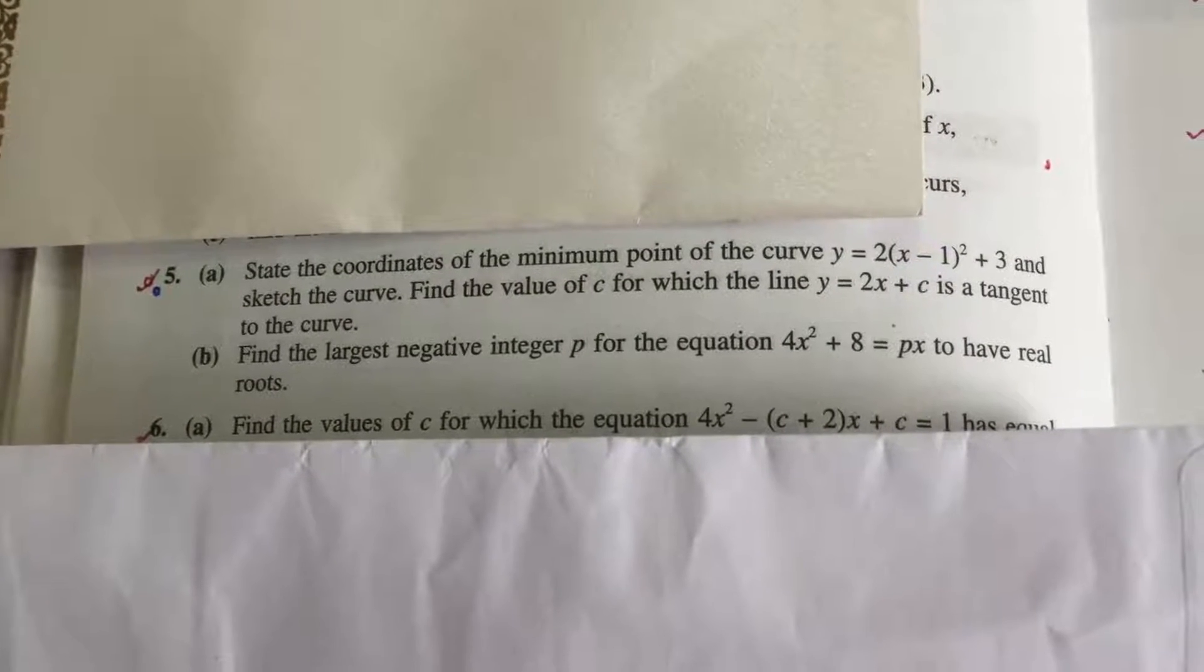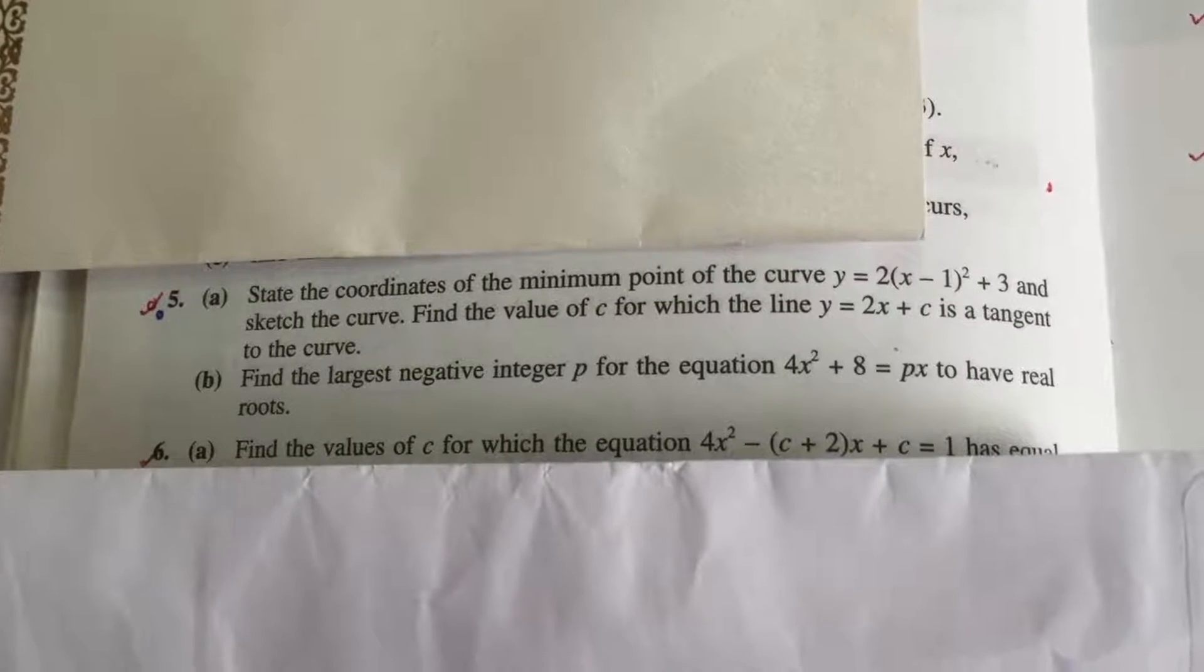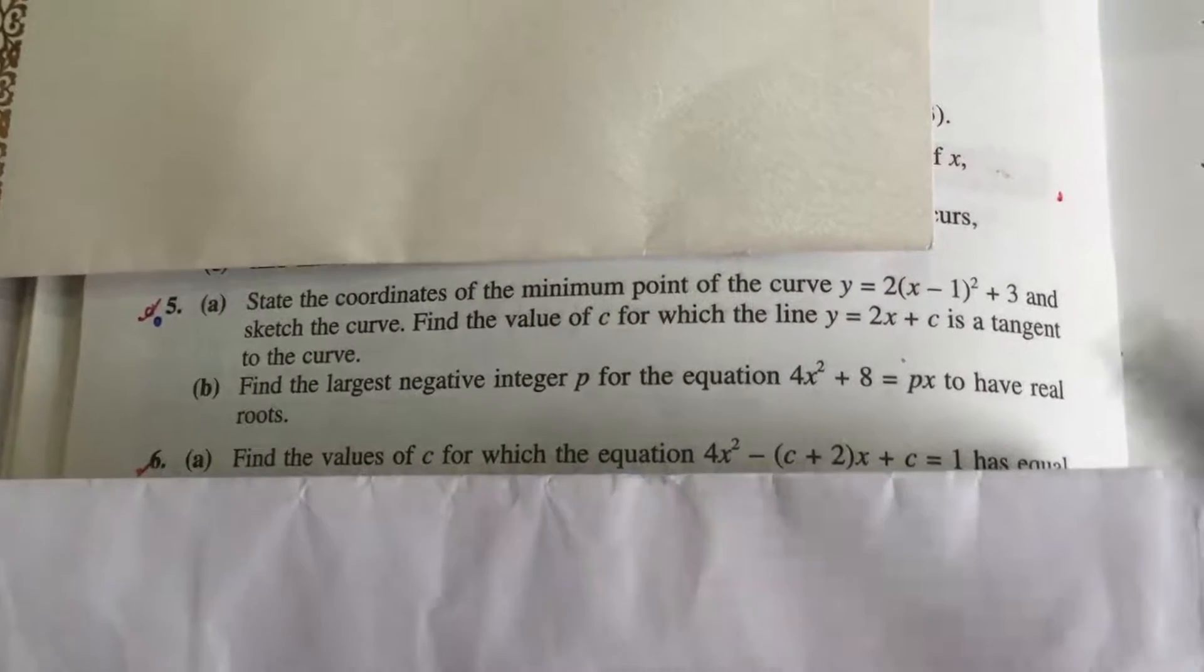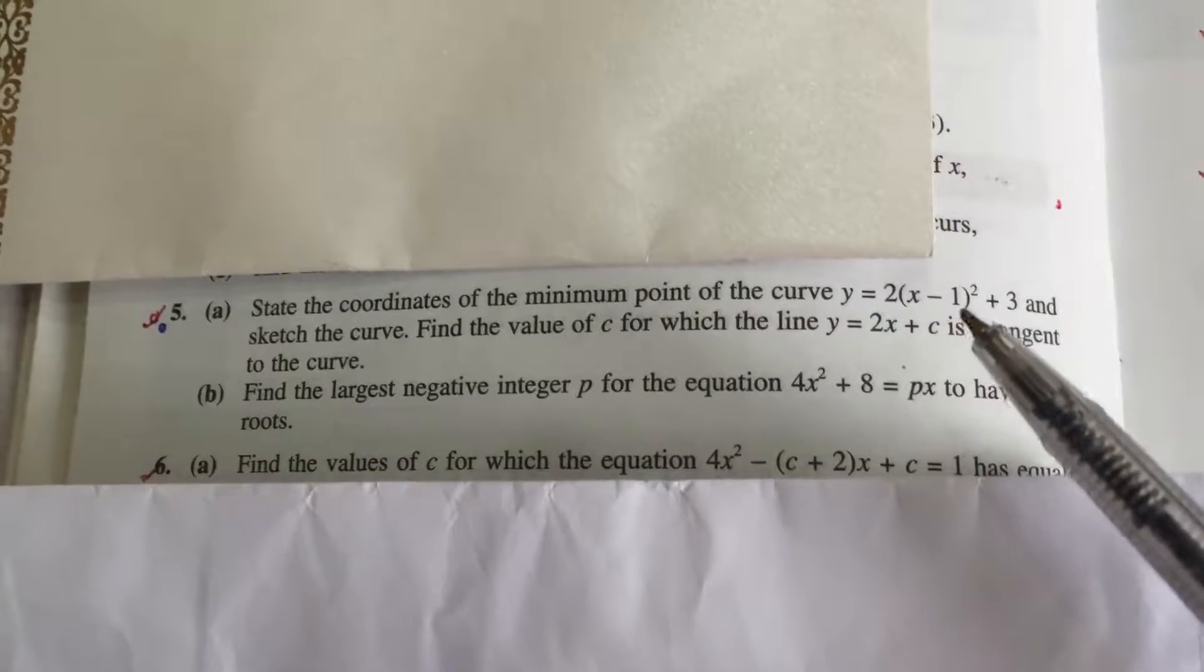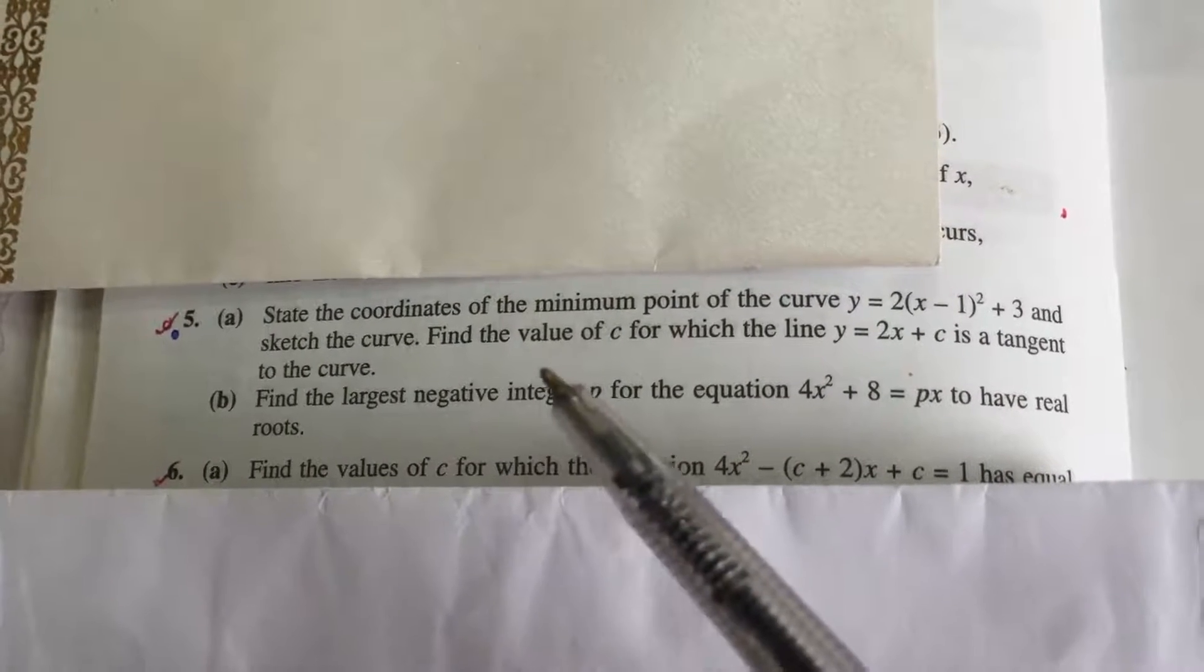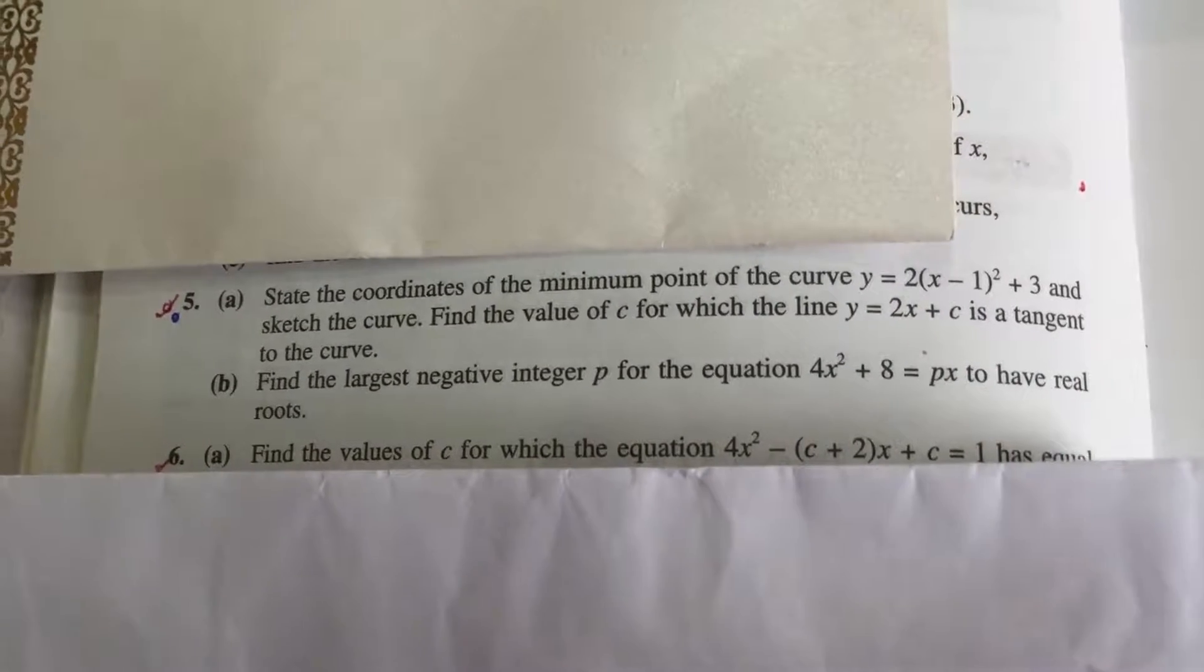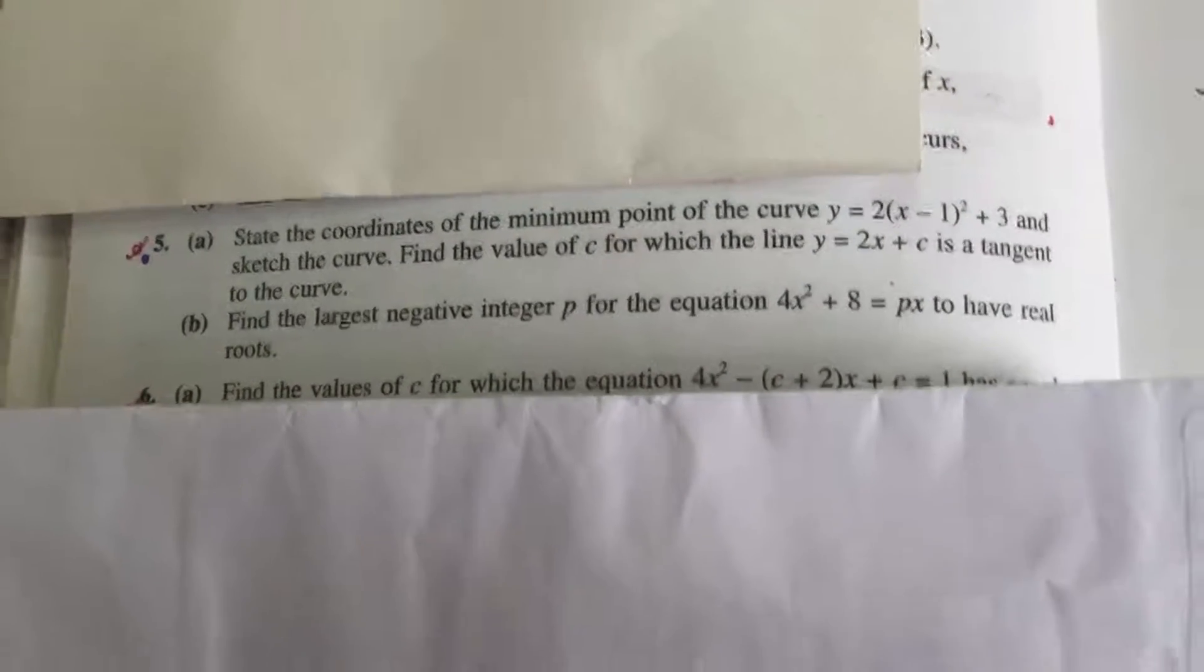There are two parts in this question. In the first one, we have to tell the coordinates of the minimum point. The equation is already given in the completing square form, and then we have to sketch the curve. After that we have to find the value of C if this line is tangent to the curve. So let's do it.